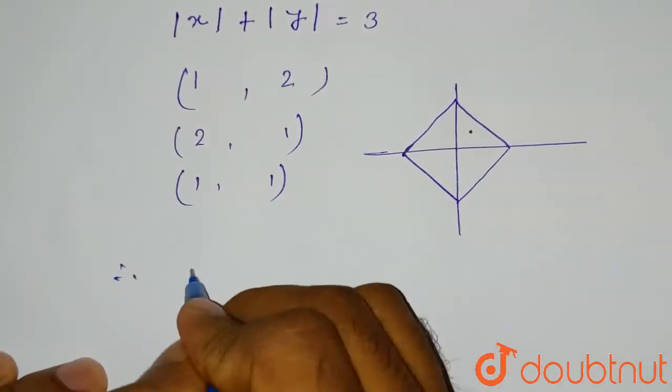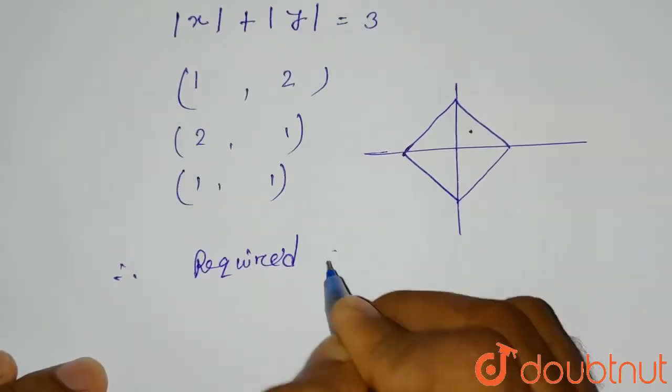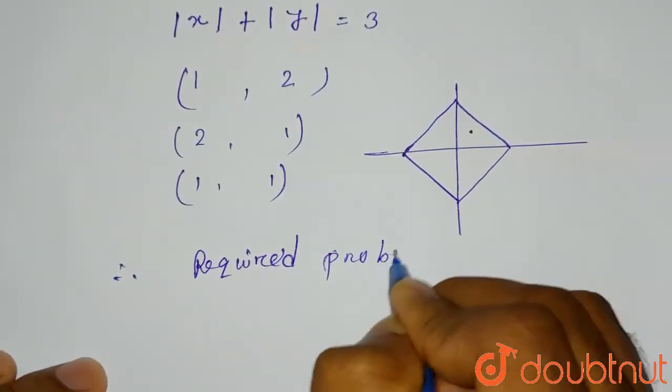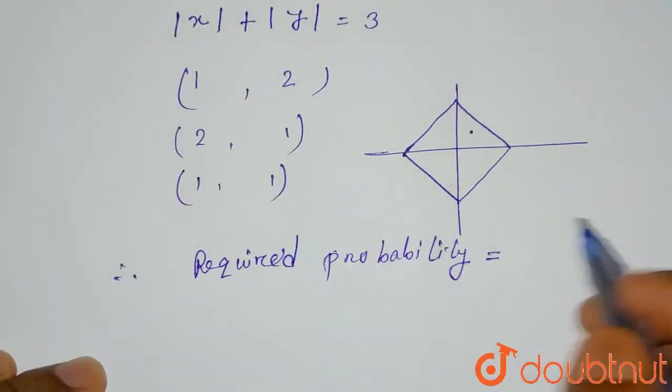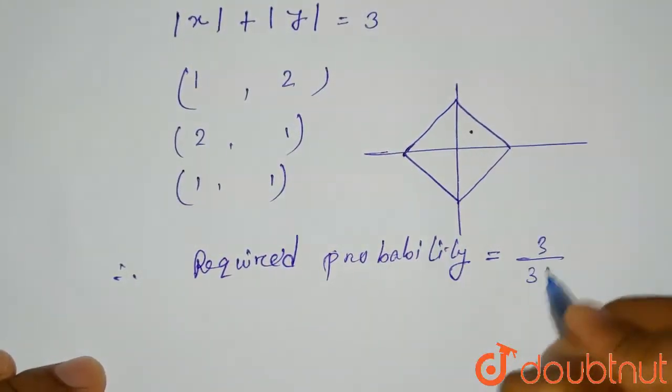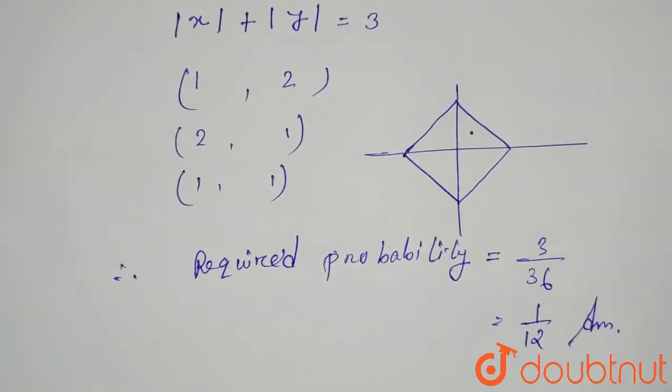Therefore the required probability will be equal to what? Total number of favorable cases is 3, and total cases is 36, so it will be 1/12. This is the required solution of this question. Thank you.